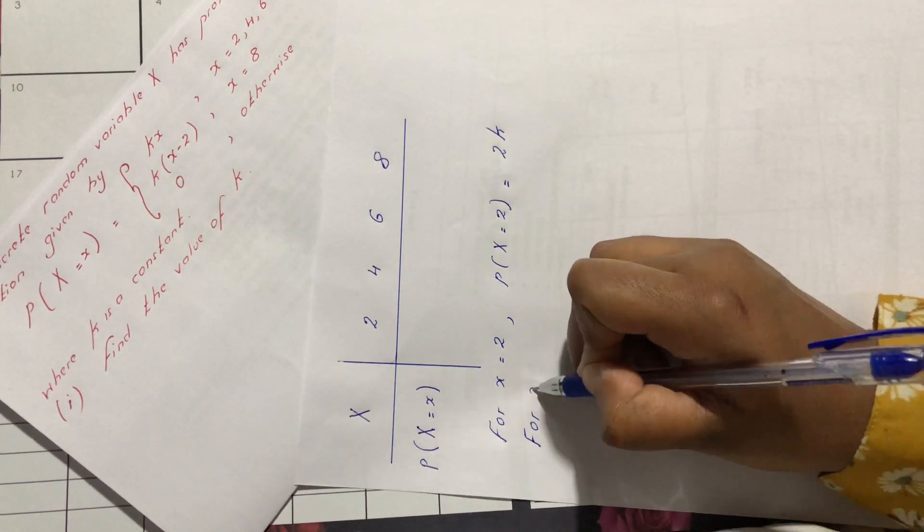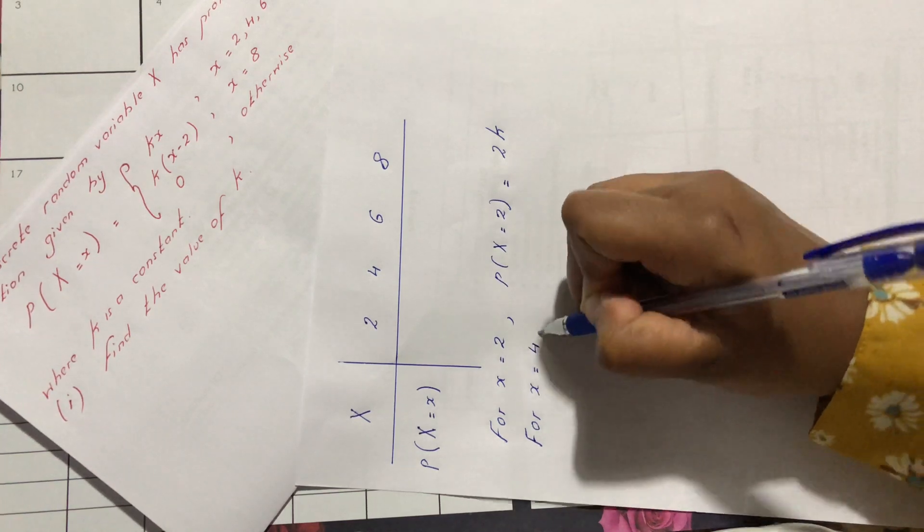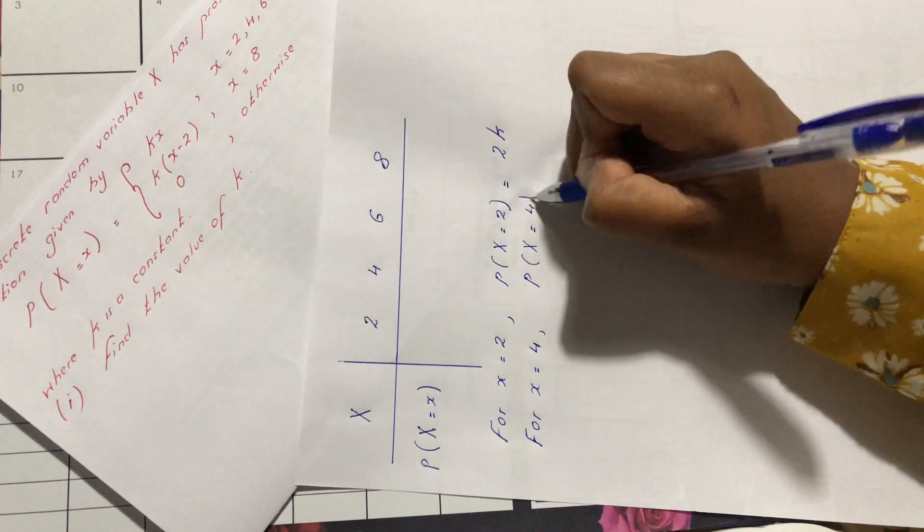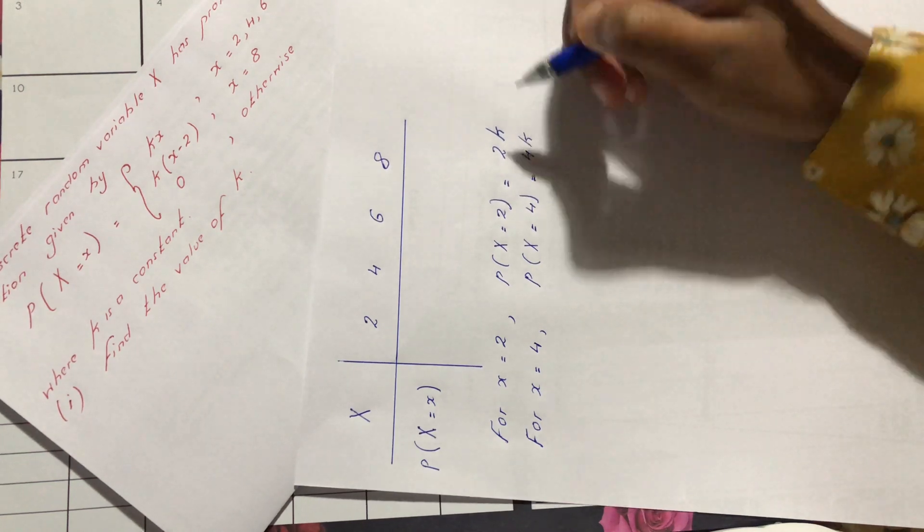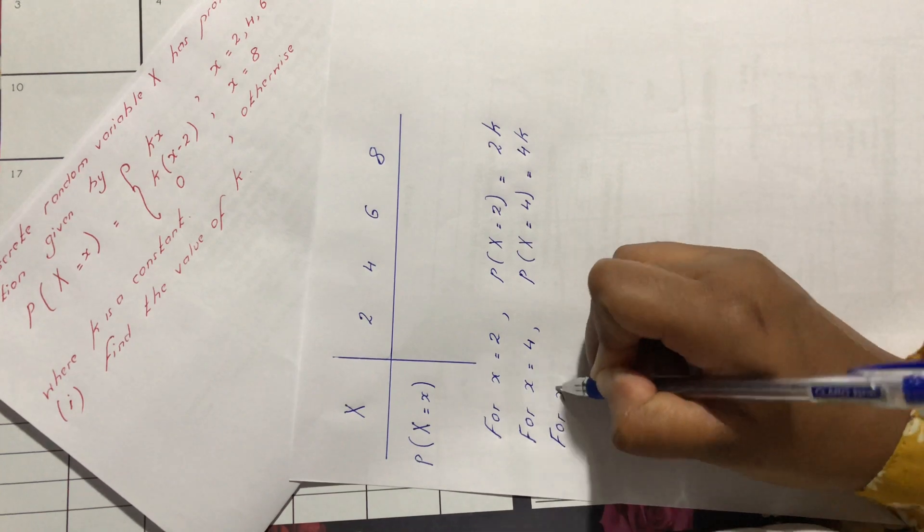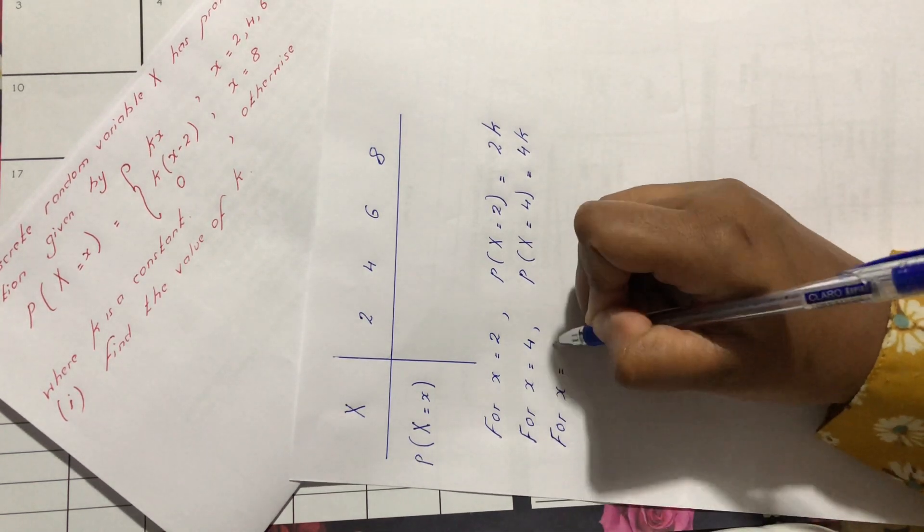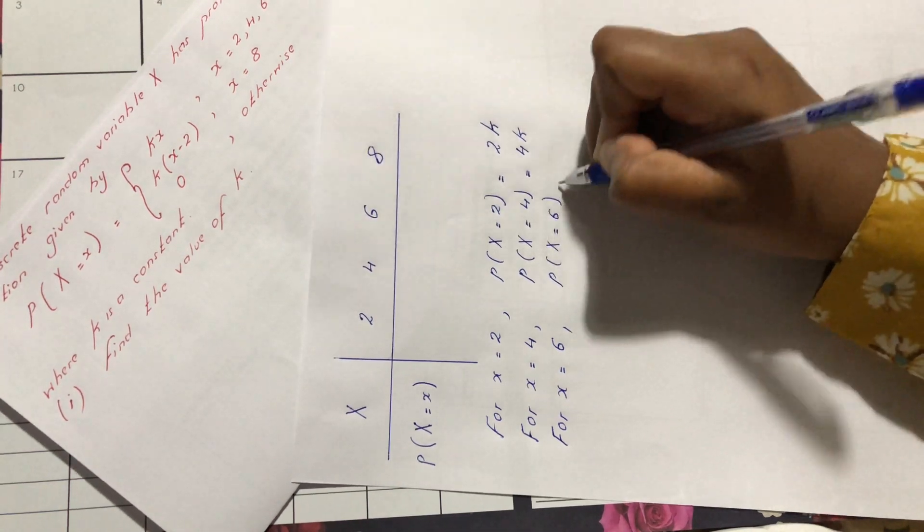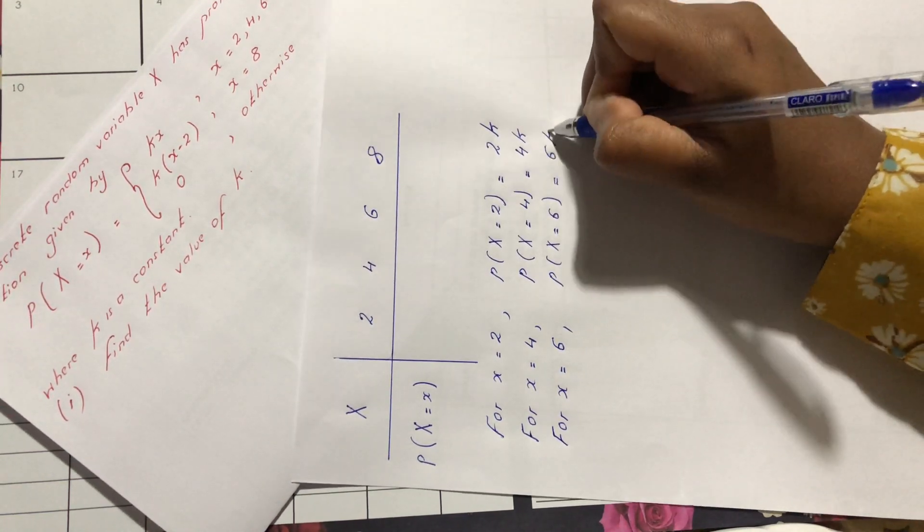For x equals 4, probability of x equals 4 is 4k. For p(x) equals 6, we have 6k.